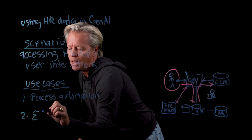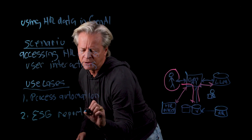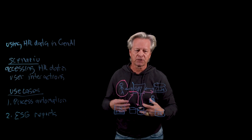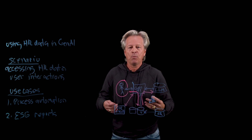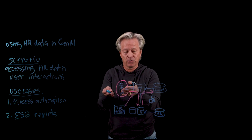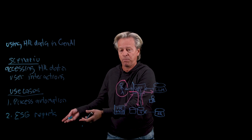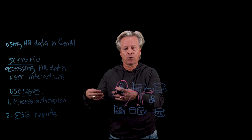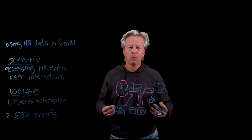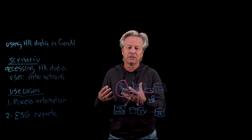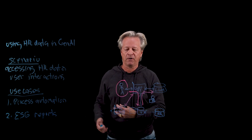The second use case is looking at ESG reports — environmental, social, and governance. These are reports that are now becoming part of filings for enterprises and companies. We want a user to go in, extract the information out of the systems needed to report on ESG, and create a report. That's based on a lot of sensitive information, so we want to make sure what comes out is secure, responsible, and appropriate for the person and the report being generated.